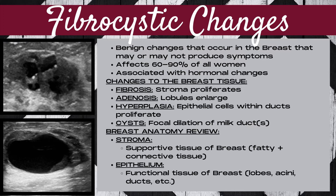Just a little breast anatomy review — there are two basic categories of breast anatomy. Number one is stroma, which is the supportive tissue of the breast: the fatty tissue plus the connective tissue. And then there is also the epithelium, which is the functional tissue of the breast: the lobes, lobules, acini, milk ducts, etc.